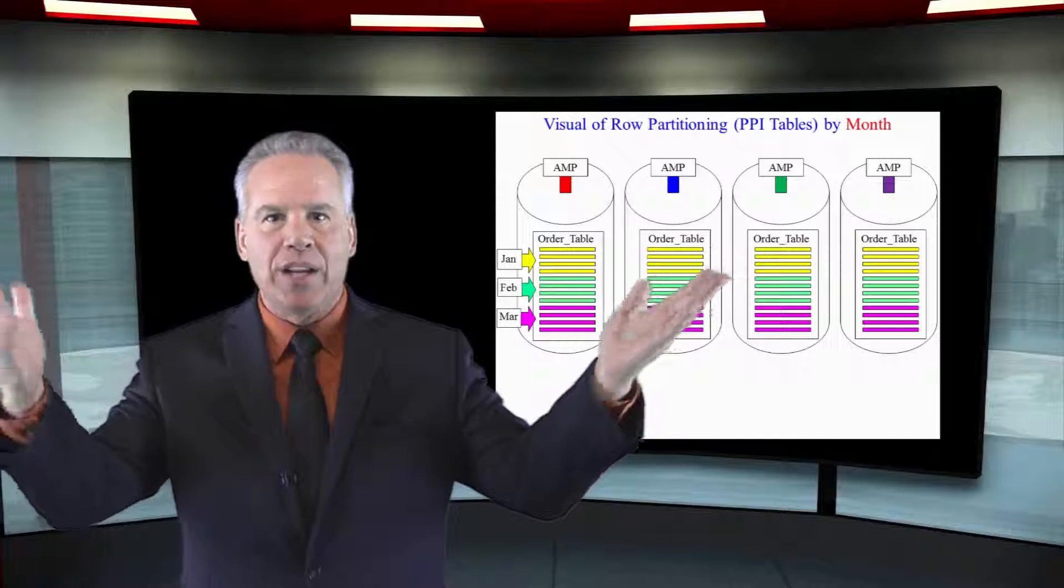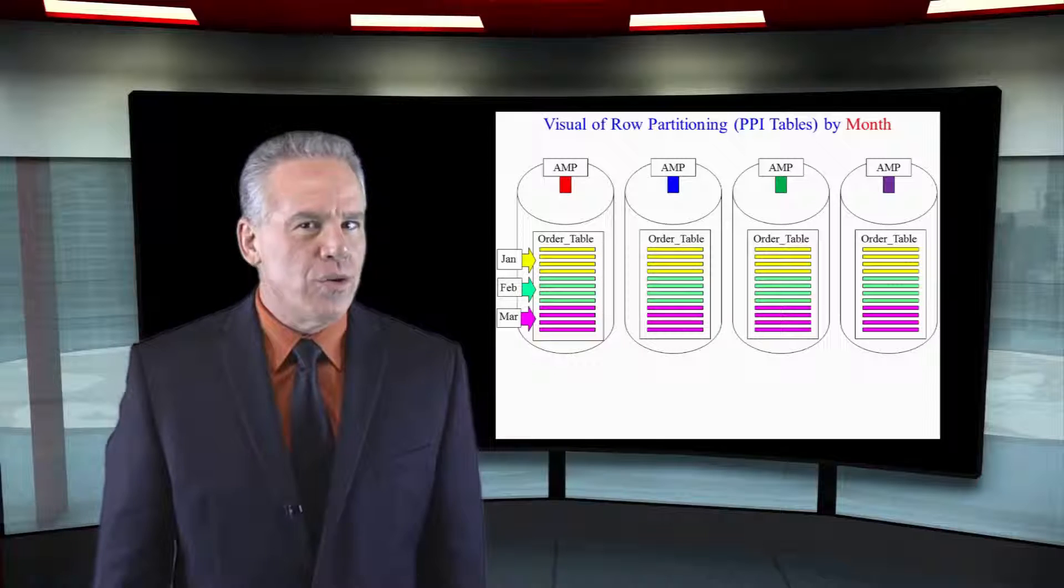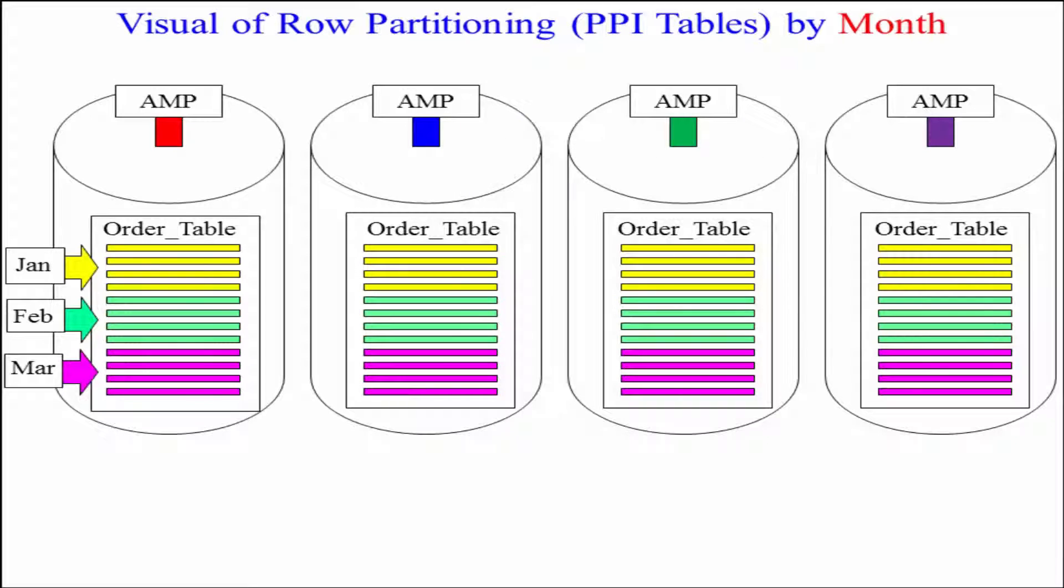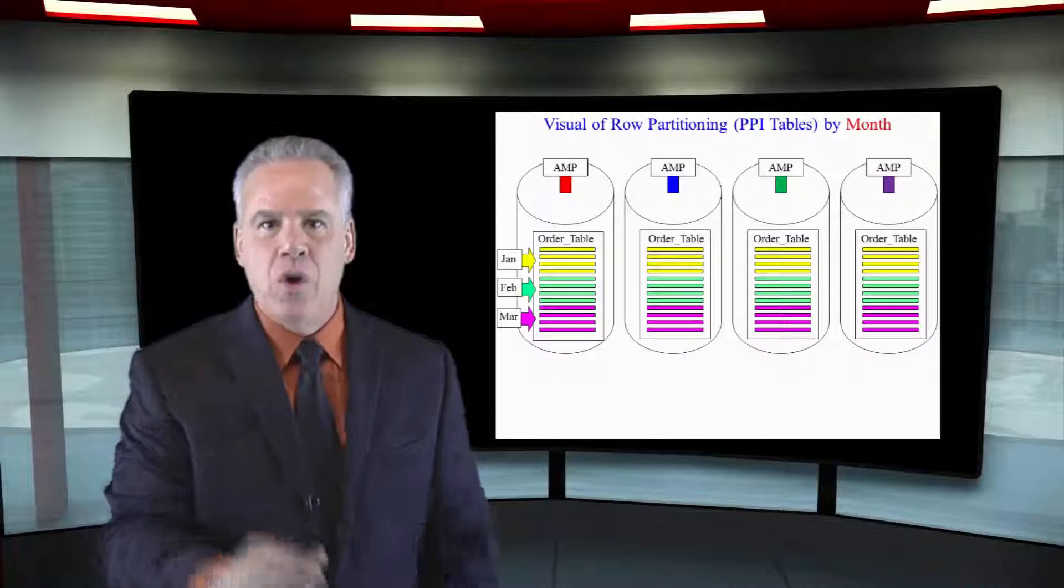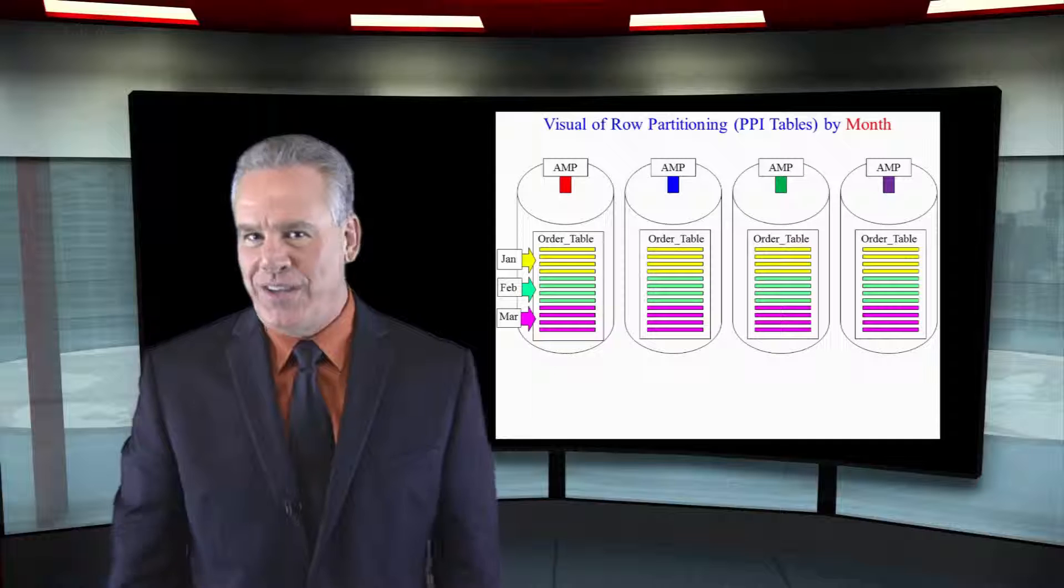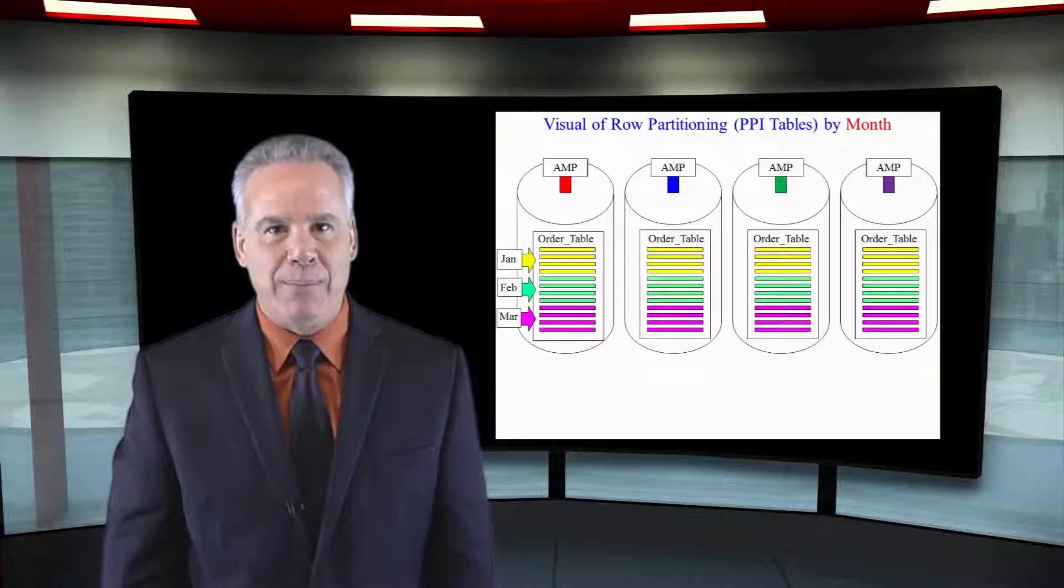That way, if we query and say, I want to know about all the orders in February, just the second partition is read on every amp. This is called horizontal partitioning, a PPI table, partitioned primary index.